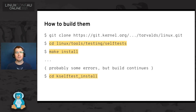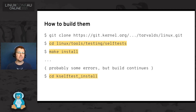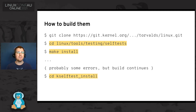So how do you build them? They're in the kernel tree, so you just clone Linus's tree or whichever tree you have. The most polished way to build them is to use the make install target, which installs them in the current directory — in this case, the selftest install directory — rather than /usr or anywhere else. You can also build the tests in place or out of tree, but those cases are a little more complicated. If you're starting out, just type make install.